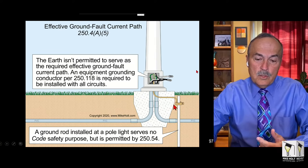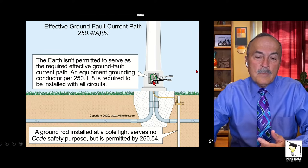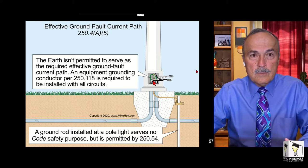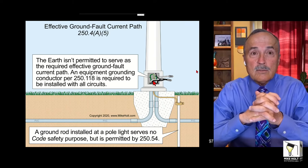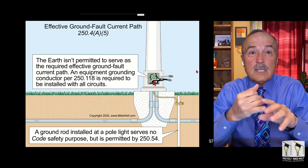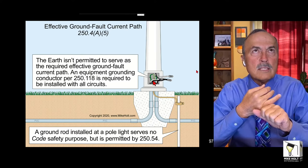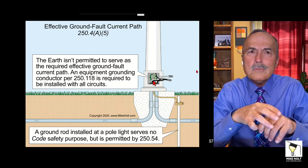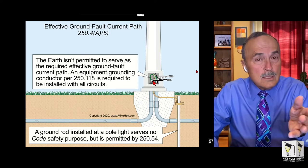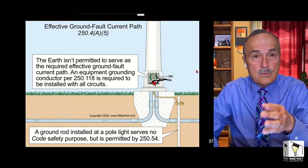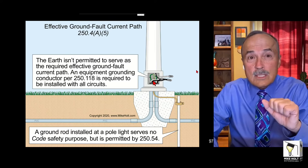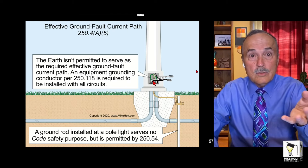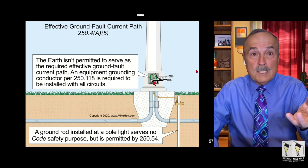The code allows you in 250-54 to install an auxiliary electrode. I've seen people put auxiliary electrodes next to motors, in pools, around pools. Now the code says if you want to add an auxiliary electrode, 250-54, you can. But you know what it also says? There are no rules. Why no rules? Because if you don't need to do something and the code says you can do it, there are no rules to follow.